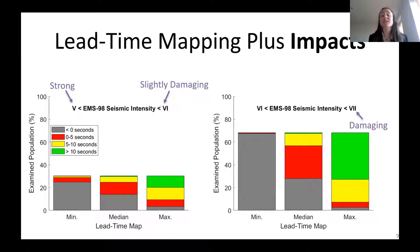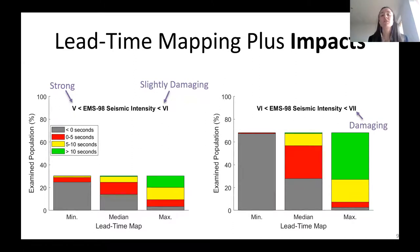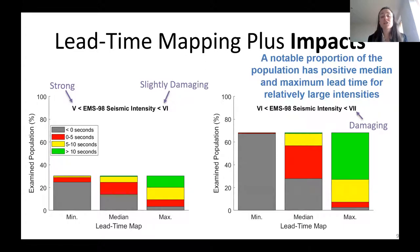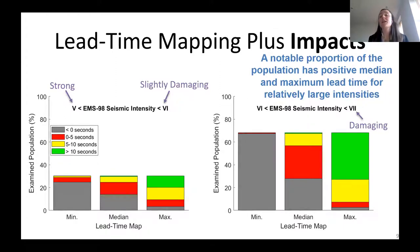About 98% of the population are exposed to average seismic intensities between strong and damaging, indicating that if earthquake early warning works there is potential for it to meaningfully mitigate losses. Looking at the median and maximum lead time maps, a notable proportion of the population have positive lead time — meaning they have some time to take action. This is again a positive indicator of the potential usefulness of earthquake early warning in Europe.